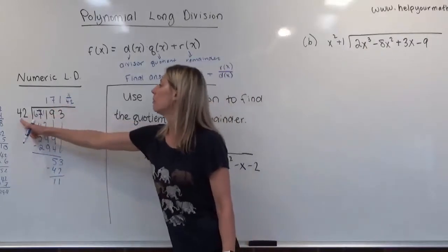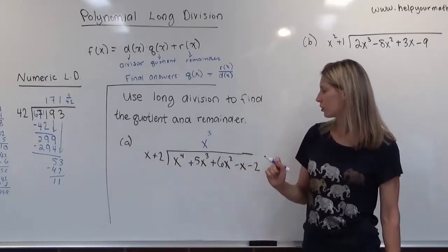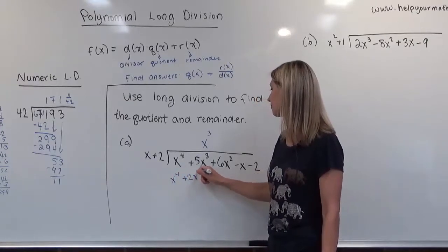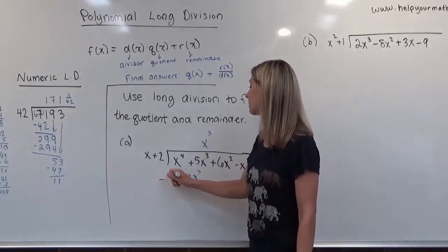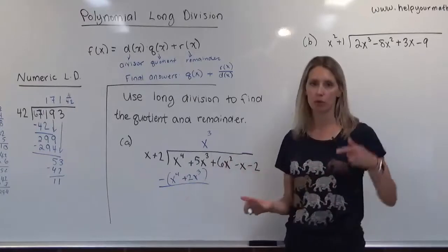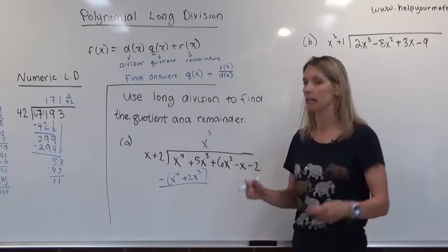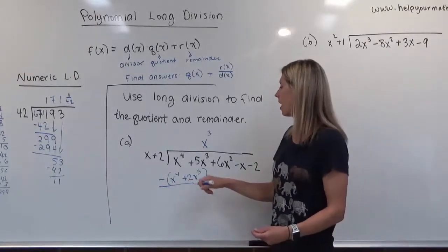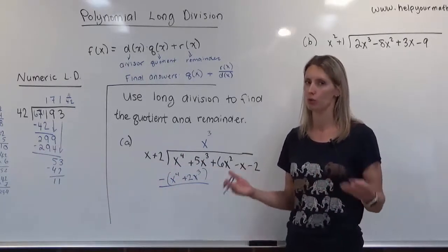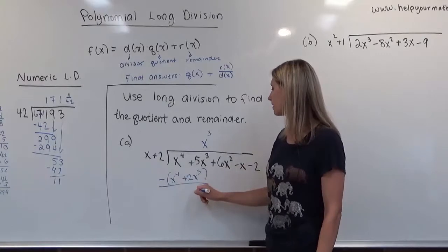We multiply x³ by the divisor to get x⁴+2x³, and then we subtract that. Because we're subtracting two terms, I'll put it in parentheses. The x⁴ terms cancel — if they don't cancel, you chose the wrong piece for your quotient. Then 5x³ minus 2x³ gives us 3x³.